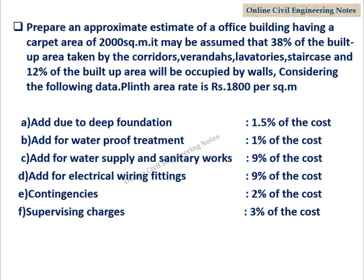Considering the following data: Plinth area rate is Rs. 1,800 per sqm. Add due to deep foundation: 1.5% of cost. Add for waterproof treatment: 1% of cost. Add for water supply and sanitary works: 9% of cost. Add for electrical wiring and fittings: 9% of cost. Contingencies: 2% of cost. Supervision charges: 3% of cost.